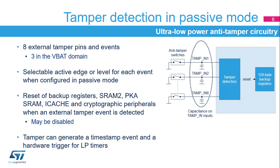Eight tamper pins and events are supported; three of them are functional in all low-power modes and in VBAT mode. The detection can be edge or level triggered, and the active edge or level is selectable for each event when configured in passive mode. A pre-charge time is determined by the TAMP PREACH bits in order to support large capacitances on the TAMP IN X inputs. A tamper event can generate a timestamp event, which can be used to record the date of the intrusion attempt. A tamper event can also be used as a trigger for LP timers. The capacitors shown in the figure perform filtering; if no external capacitors are explicitly connected to a tamper input, they provide a model of the trace capacity.